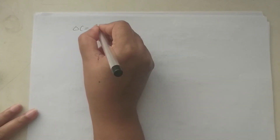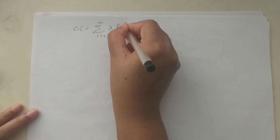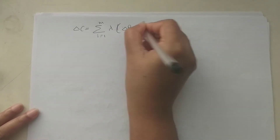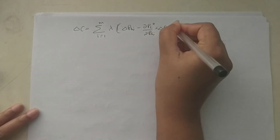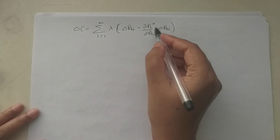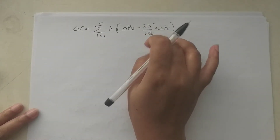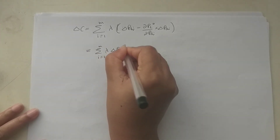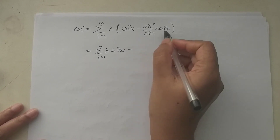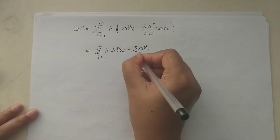Expanding equation 1: delta C = summation (i = 1 to m) of lambda times (delta P_Gi minus ∂P_L/∂P_Gi times delta P_Gi). From equation 2, the summation of (∂P_L/∂P_Gi times delta P_Gi) equals delta P_L. So: delta C = lambda times (summation of delta P_Gi minus delta P_L).